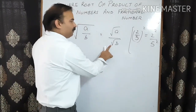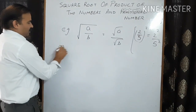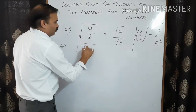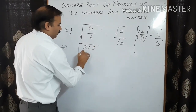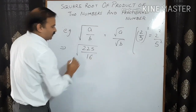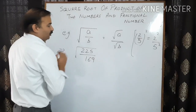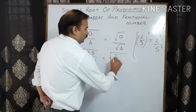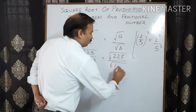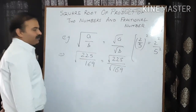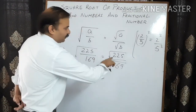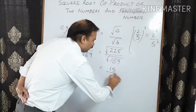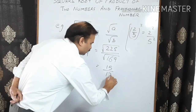Again, you may take any number in place of a and b. Let us take 225 on top and 169 on the bottom. So we can write it as square root of 225 upon square root of 169. Now, the square root of 225 is 15 and the square root of 169 is 13. So the answer is 15 upon 13.